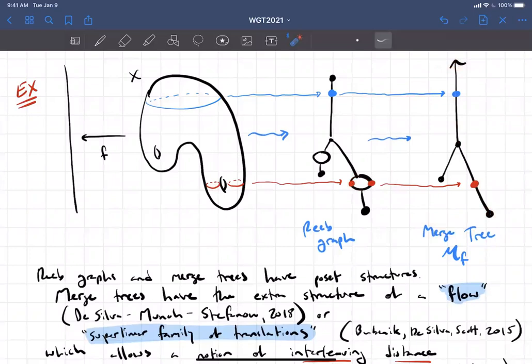A slightly simpler invariant is the merge tree, which is also a quotient, but here I'm going to say that two points are equivalent if they lie in the same connected component of the sublevel set. Since I can get from this point to that point by going down, these two points get identified. The merge tree has some extra structure similar to the real line, which is that I know how to shift upwards in a well-defined way. That extra structure of being able to shift allows you to define generalized versions of interleaving distance.